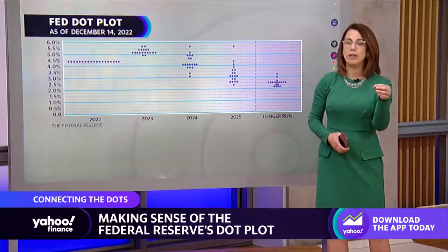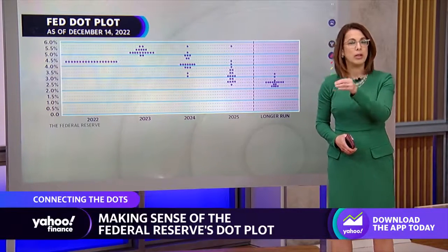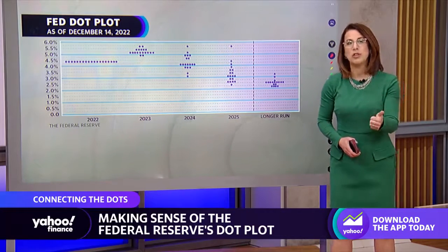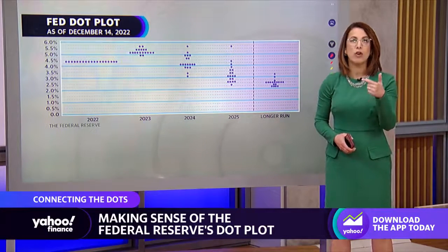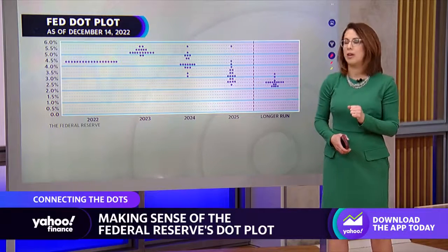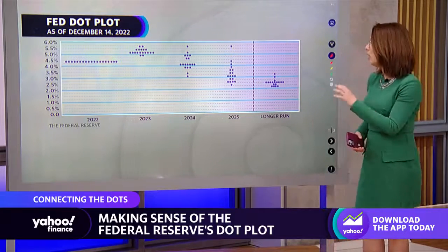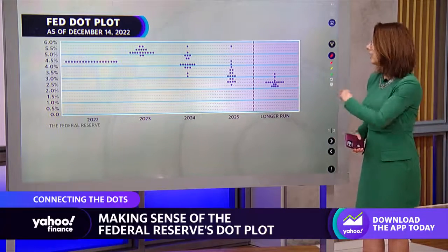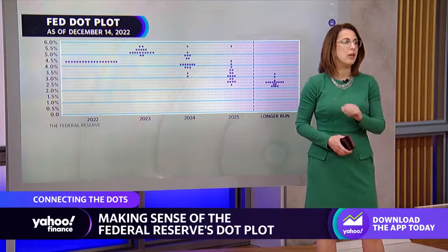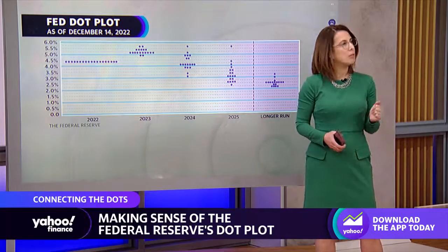Even though a lot has happened in between, including some persistent inflation figures and, of course, the collapse of Silicon Valley Bank and others and the tightening of credit conditions. So that's all the dot plot is.